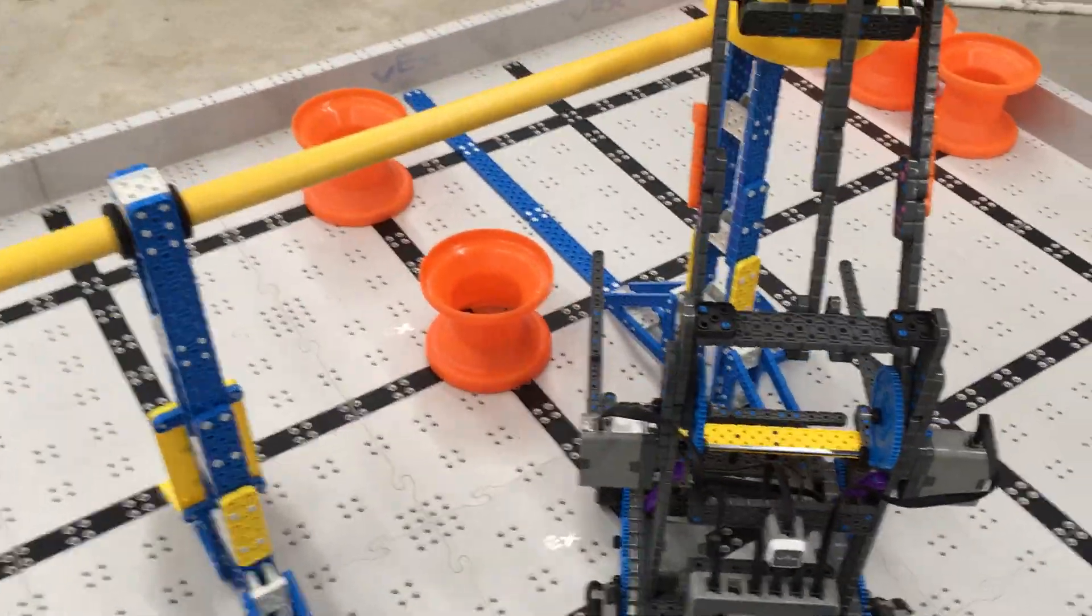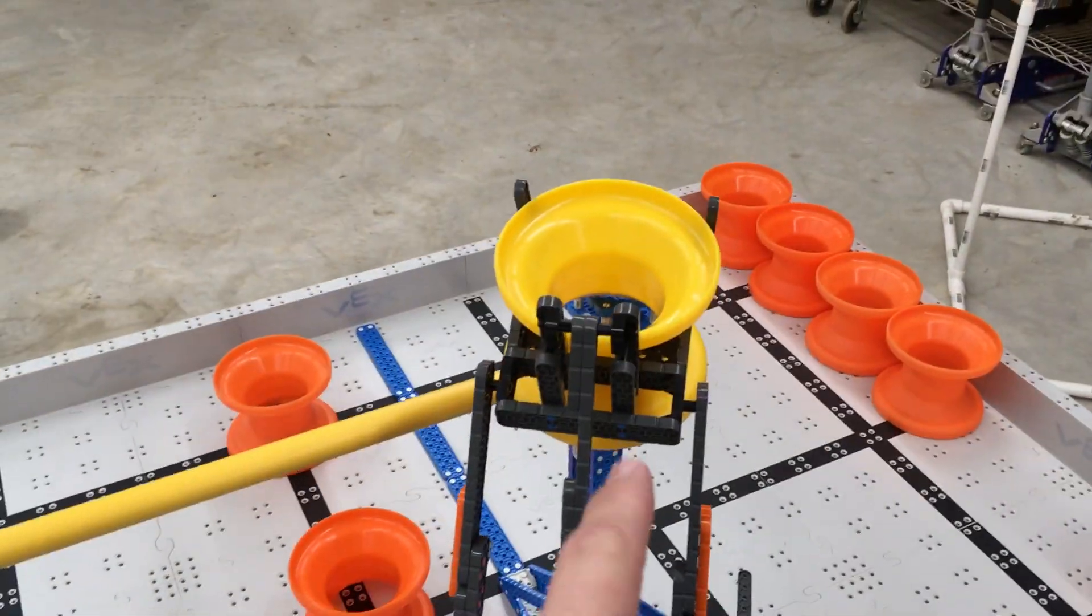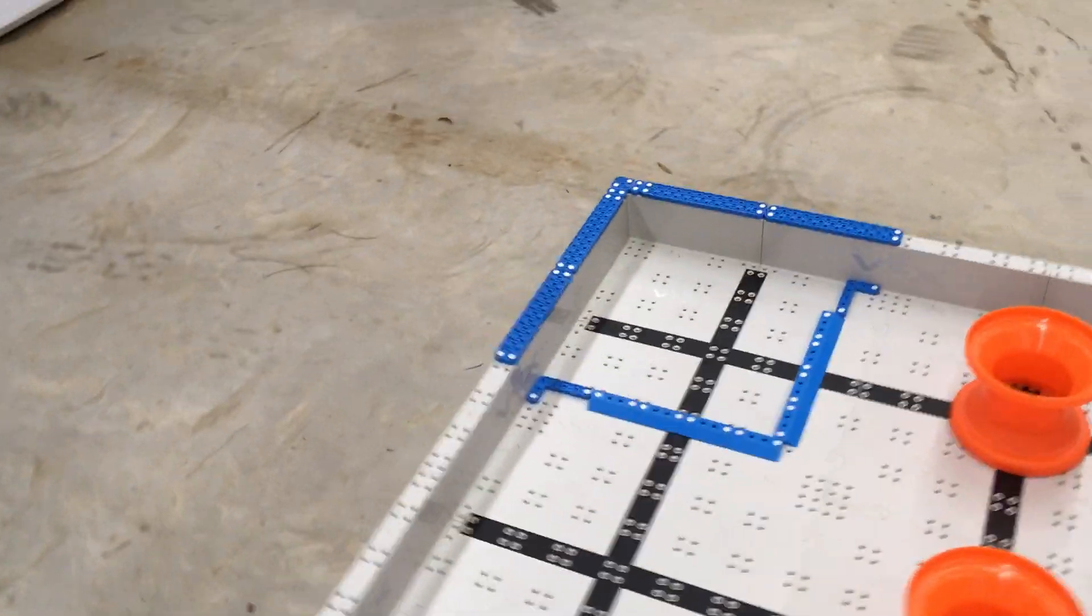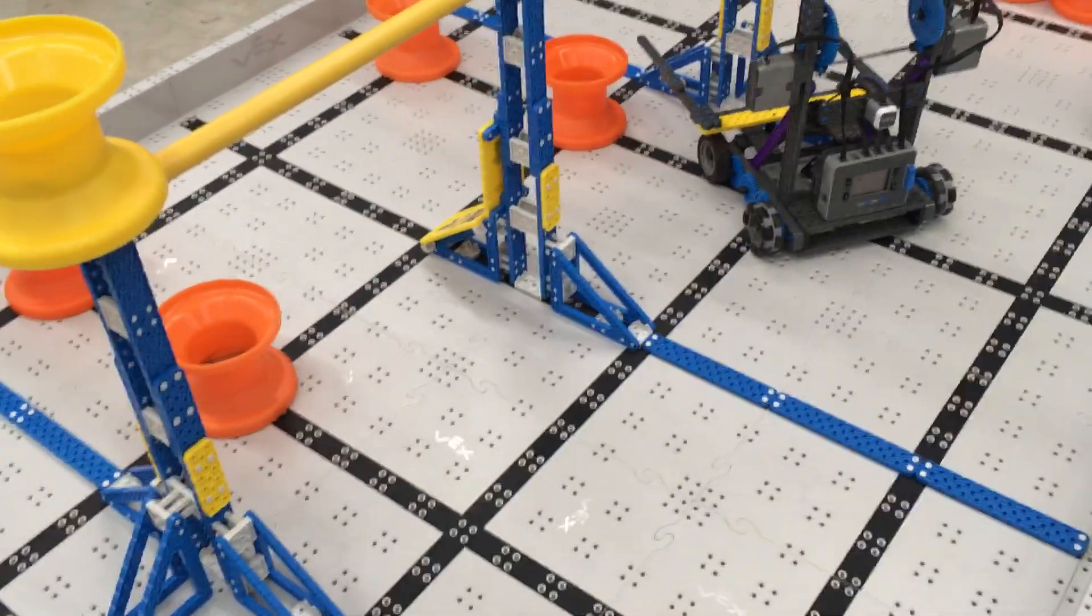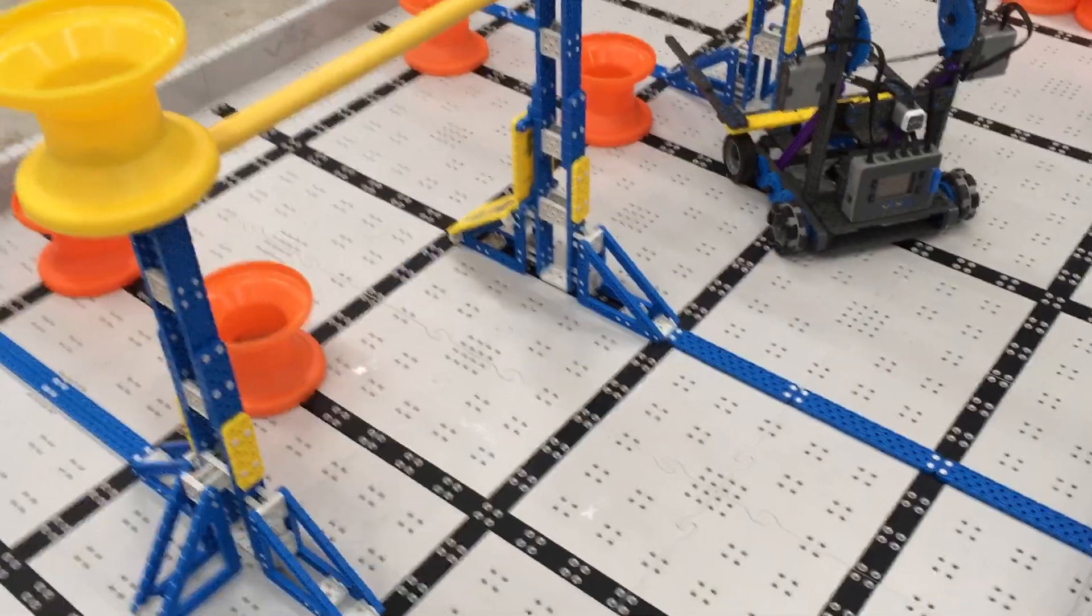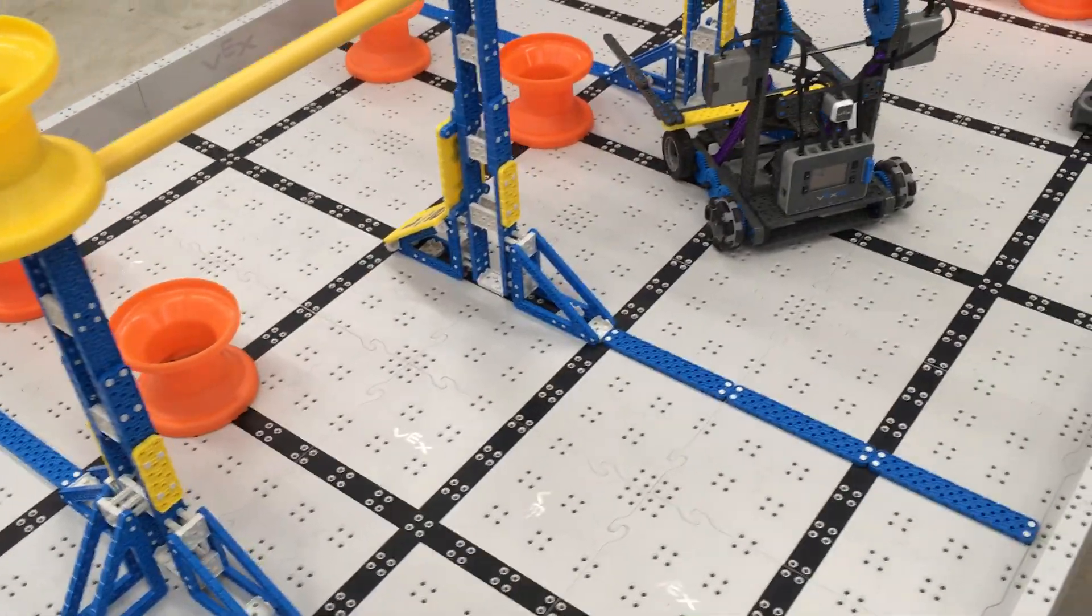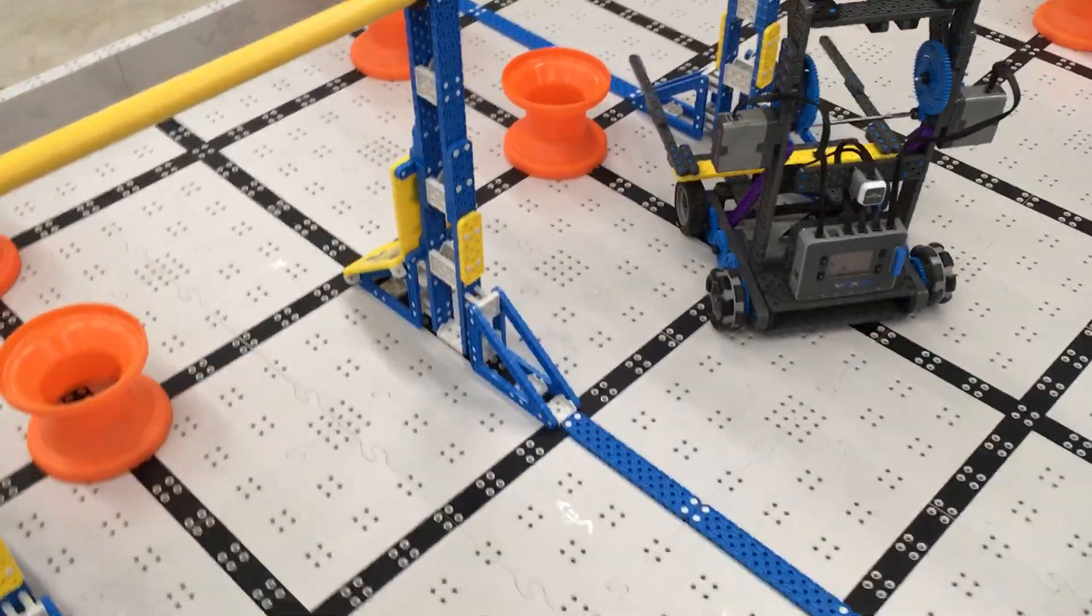And then when you're finished recording all the steps, getting the yellow, pushing the orange, coming around, pushing all the way into the scoring zone, and then setting the hub down, then all you've got to do is go back to the VEX code, to your normal autonomous coding, and put all those steps in there.